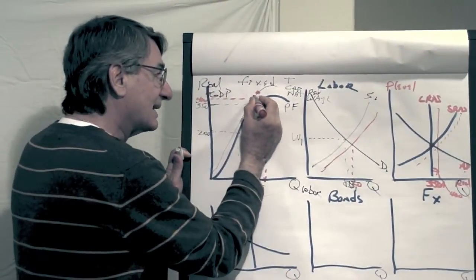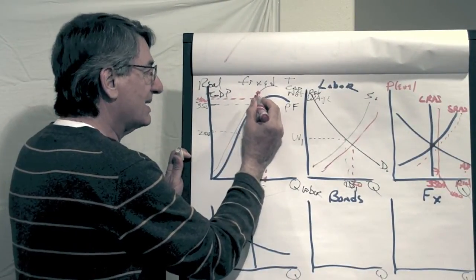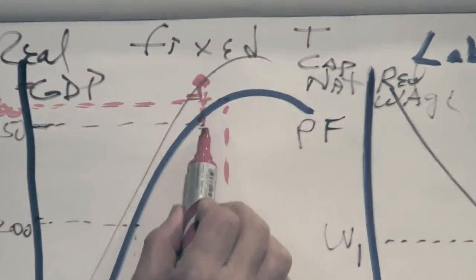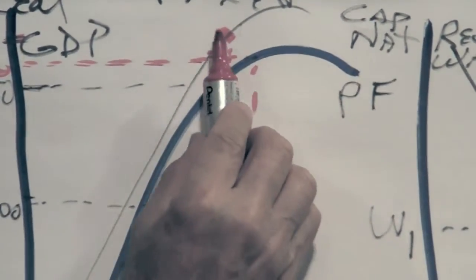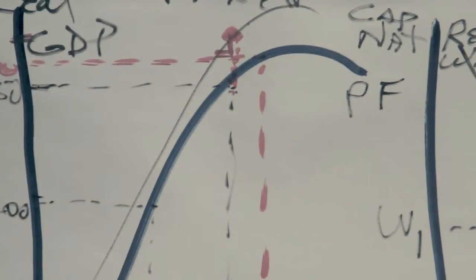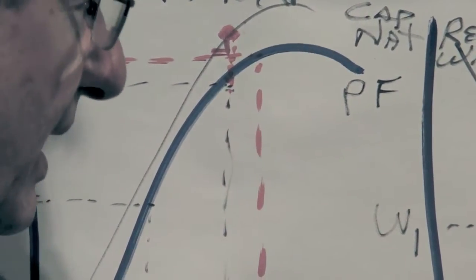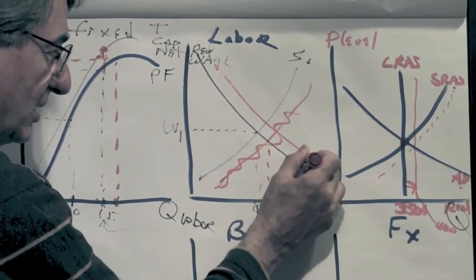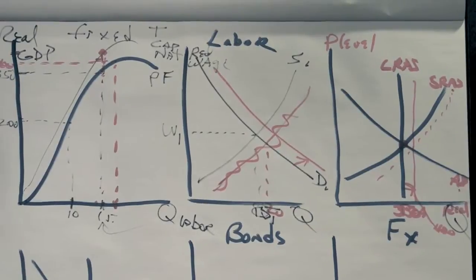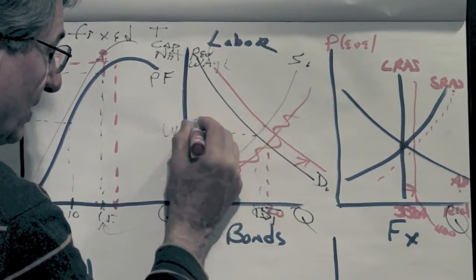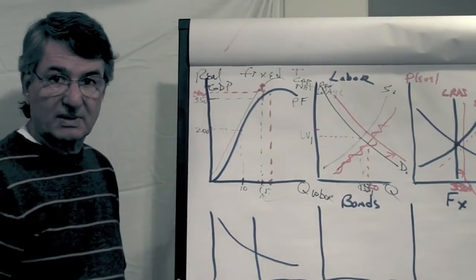And the other last little bit, but it's an important one, is since we're now on this new production function and right there, that same 15 million worker working, the slope of this function is steeper now. This means that the marginal product of labor has increased, and the marginal product of labor determines labor demand. So when marginal product increases, labor demand increases, and the real wage will rise a bit because worker productivity has risen.